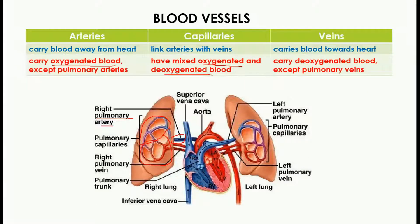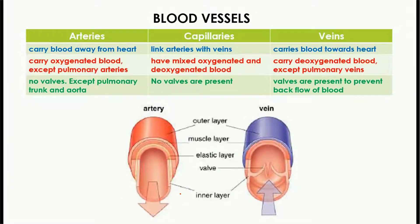In the case of veins, they always carry deoxygenated blood — blood which lacks oxygen or has a low amount of oxygen — except the pulmonary vein. Here you can see the pulmonary vein, and the blood present in it is oxygenated blood, as we can see it is red in color.